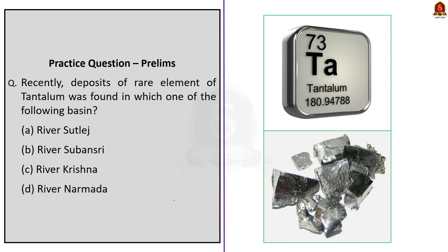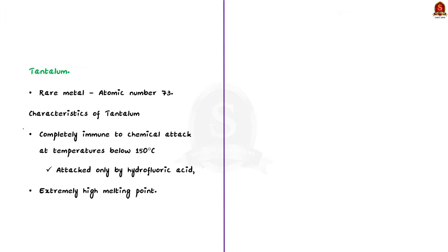Look at this question: Recently, deposits of the rare element tantalum were found in which one of the following basins? A team from the Indian Institute of Technology Ropar has found the presence of tantalum, a rare metal, in the Sutlej River sand in Punjab. So the correct option is A. Tantalum is a rare metal with atomic number 73, and it is part of the refractory metal group, widely used as a component in strong, high-melting-point alloys.